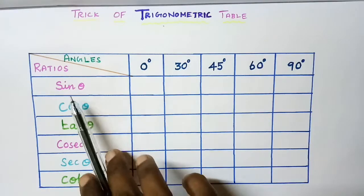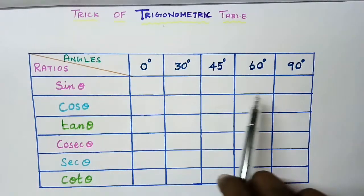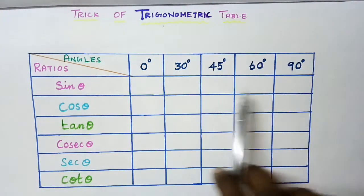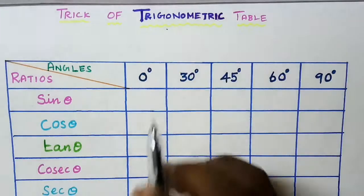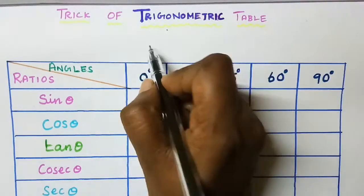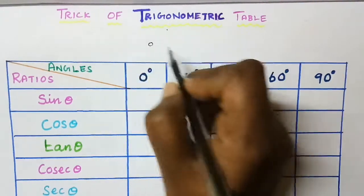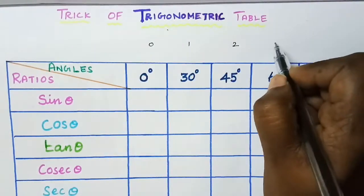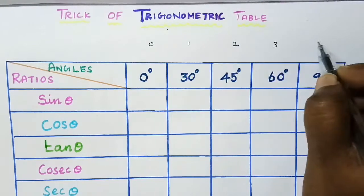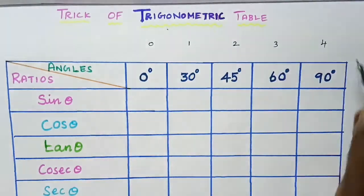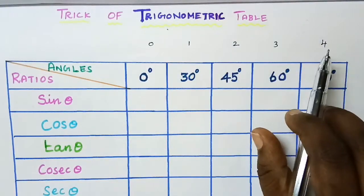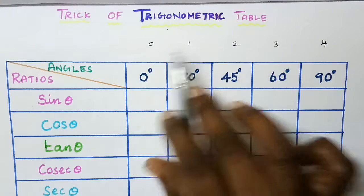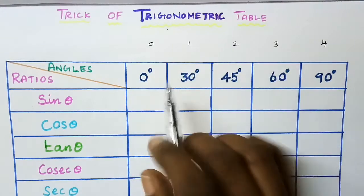First we are going to find out sin theta values, that is the first horizontal row. Just write the numbers from 0 to 4 in order: 0, 1, 2, 3, 4. Here the largest number is 4.